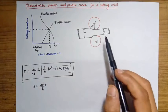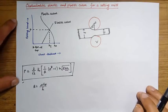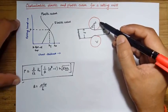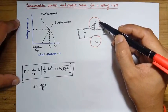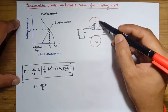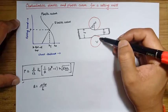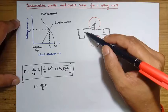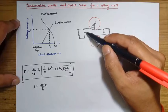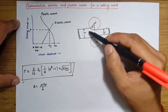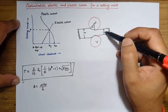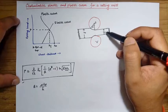So what is basically a rolling mill? In a rolling mill we have got the rollers — this is roller one, roller two — and in between you feed the sheet with initial size H naught, and it is getting reduced to HF.